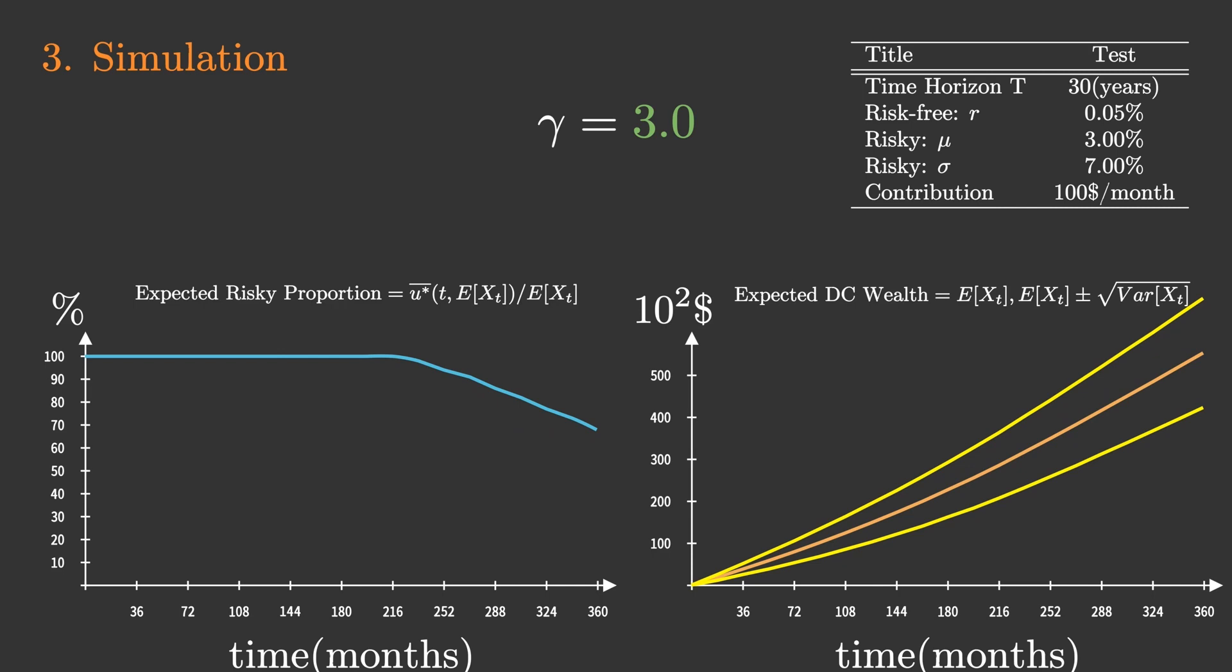The results show that, for all gamma, gradually reducing the percentage of risky assets is optimal. It is often said that risky asset holdings should be lowered gradually toward retirement. This recommendation was theoretically confirmed.